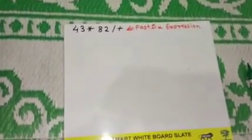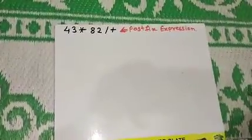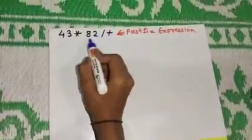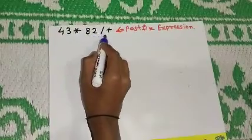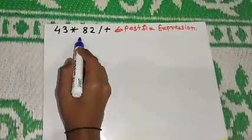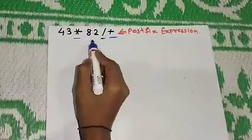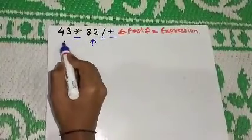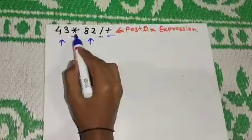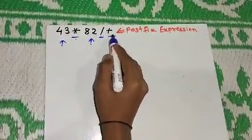In this video I am going to explain how to construct an expression tree from a given postfix expression. We have one postfix expression: 4 3 * 8 2 / +. We can identify it as a postfix expression because the operators come after the operands. Here, 4, 3, 8, and 2 are operands, and multiplication, division, and addition are the operators.